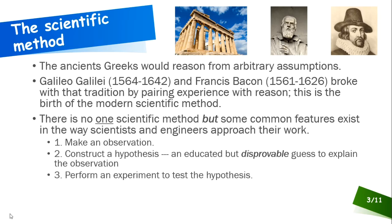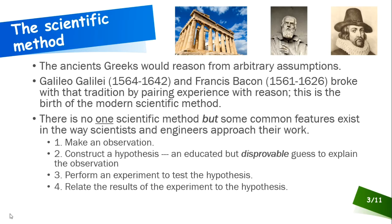The next step that's common among the different approaches is to perform an experiment. We have to test the hypothesis to see if it actually explains the observation or not. That experiment will give us results, and we then relate those results back to the hypothesis. Did our explanation of the observation pan out? Is it actually a legitimate explanation for what we observed? Or did our experiment say it's not a legitimate explanation, that there's something else at work? It's not really a matter of being right or wrong when you construct your hypothesis. It's just about going through the process and making sure that experience is what rules the day.